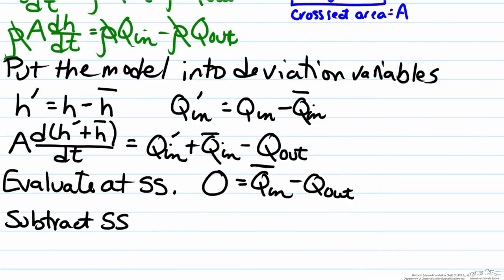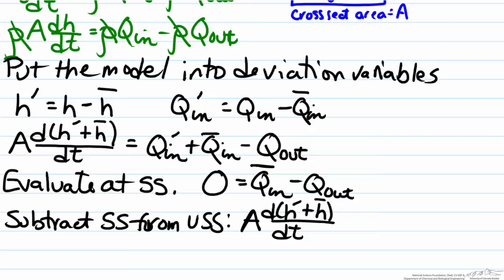When we subtract the steady state from the unsteady state, we have the left hand side is A d(h' + h_bar)/dt equals the Q_in bars cancel out, as do the Q_out terms, so all we're left with on the right hand side is Q_in'.